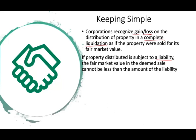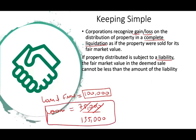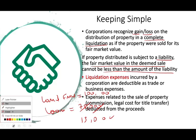If the property distributed is subject to a liability, we need to consider this: assume we are distributing land with a fair market value of $100,000 and a loan of $75,000 against it — we use $100,000. But if the loan is $135,000, greater than the FMV, then the fair market value is deemed to be $135,000, because you have to pay off the loan to own that land. The fair market value in the deemed sale cannot be less than the amount of the liability.